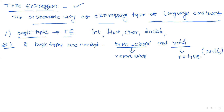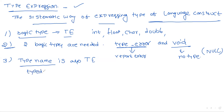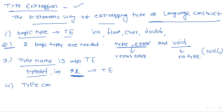Type name is also a type expression. For example, consider typedef int* x. Here, we already know typedef — we are defining a new data type. This statement defines the type name x, which is generally an integer pointer. By using typedef we are defining this, so this is also considered as a type expression.